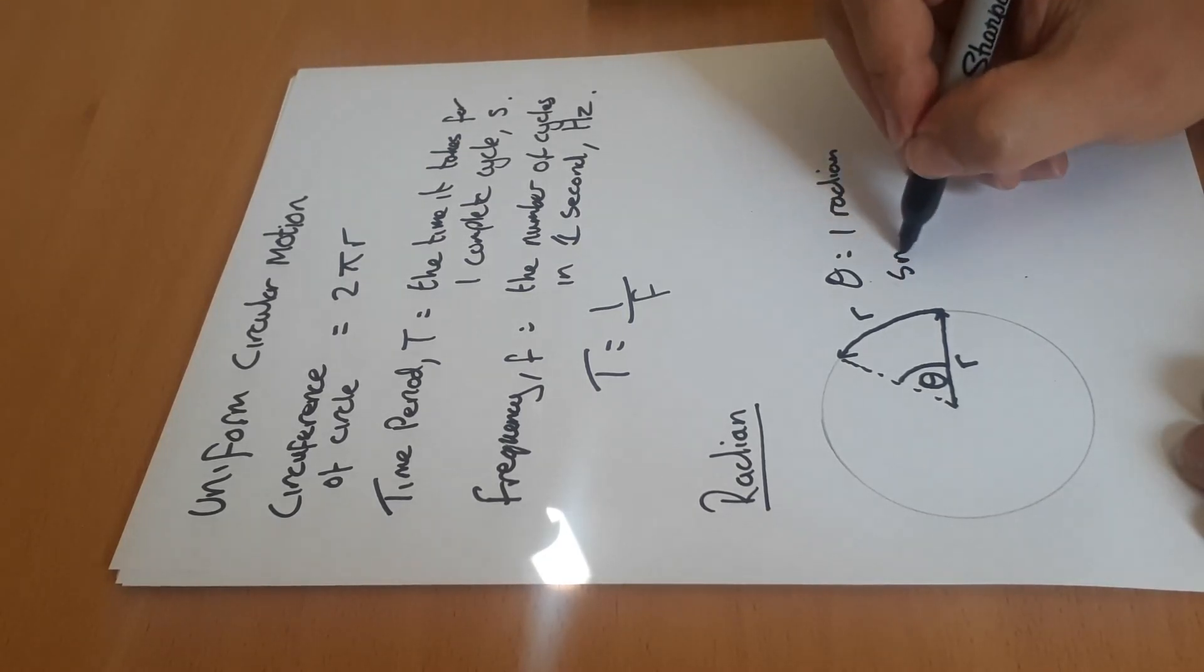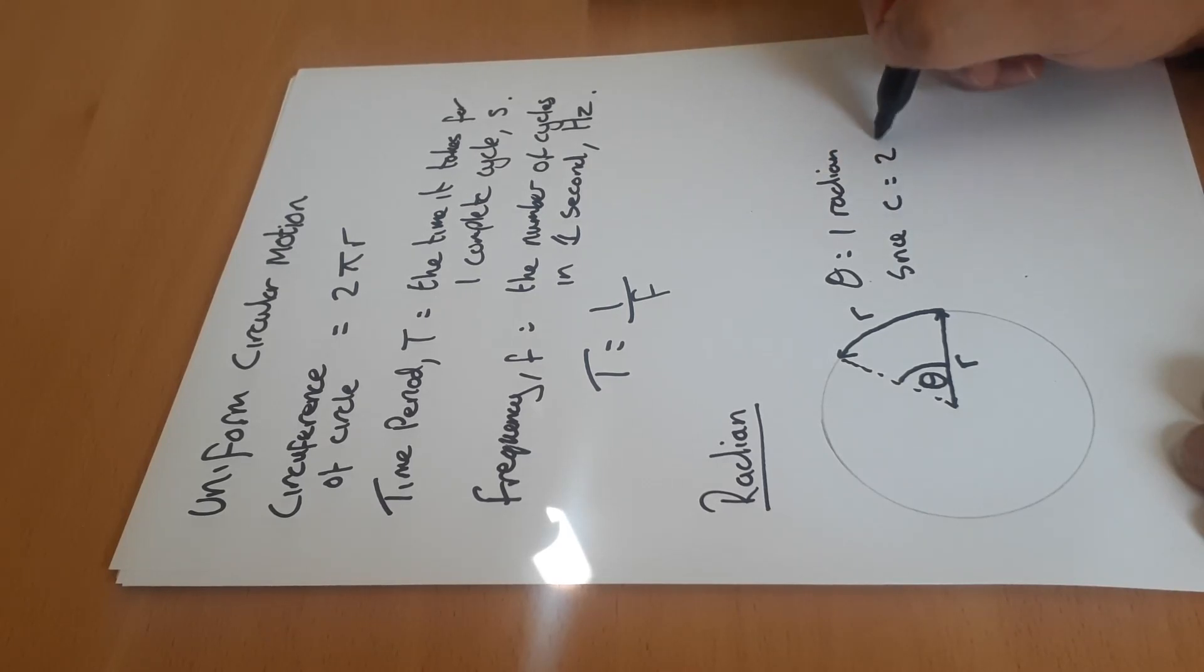And since the circumference of a circle is equal to 2πr, then there must be 2π radians in a circle.